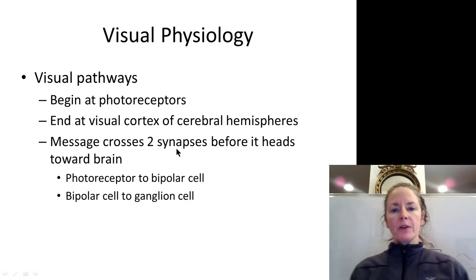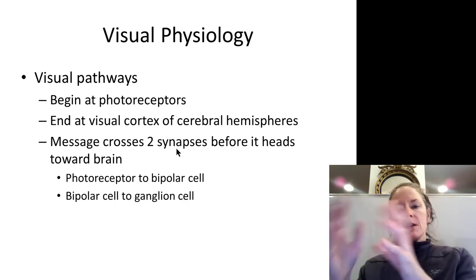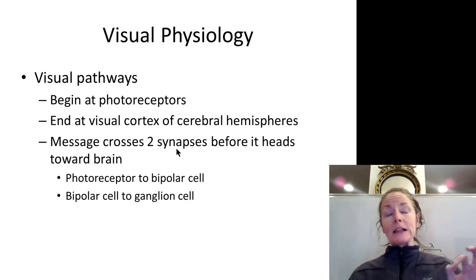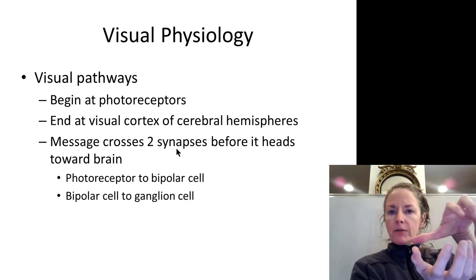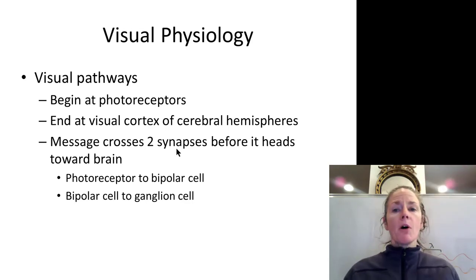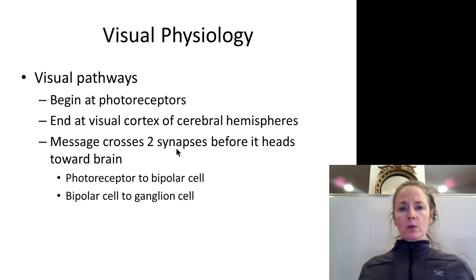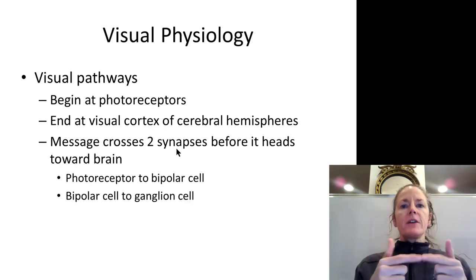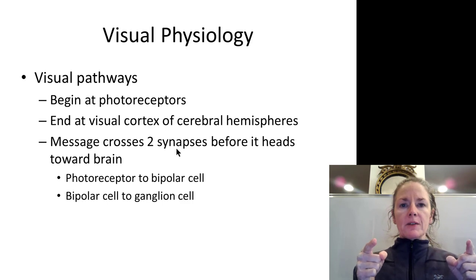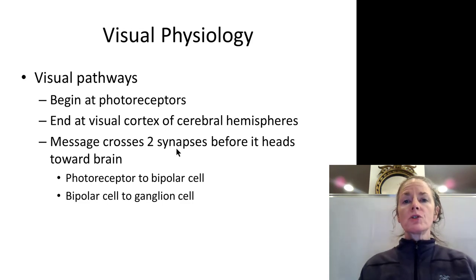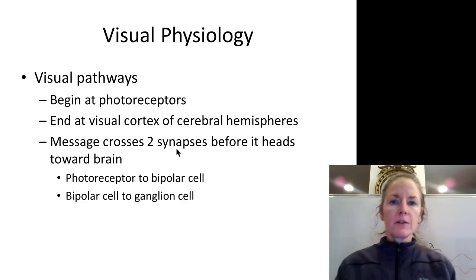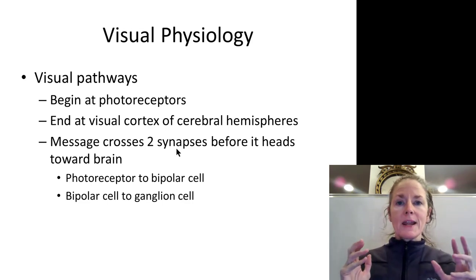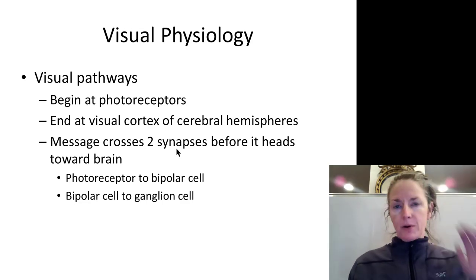Now let's talk about visual pathways. We have photoreceptors, bipolar cells, and retinal ganglion cells. The axons of the retinal ganglion cells become the optic nerve, turning at the optic disc and exiting the eyeball as cranial nerve 2. Cranial nerve 2 crosses at the optic chiasm. After the chiasm it is called the optic tract. The optic tracts on either side synapse within the lateral geniculate nucleus of the thalamus. From there, neurons called the optic radiations project back into the primary occipital cortex.